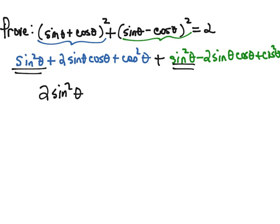We have a 2 sine cosine and then a negative 2 sine cosine, so those are going to cancel out. And then we have a cosine squared plus a cosine squared, so that's going to be 2 cosine squared.